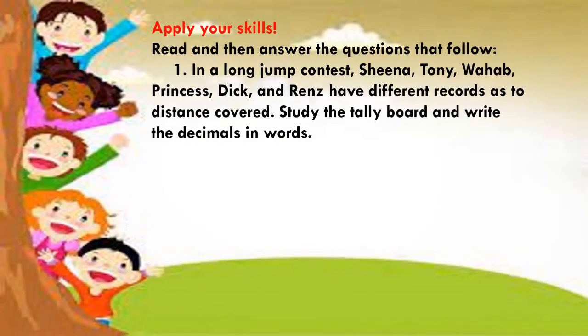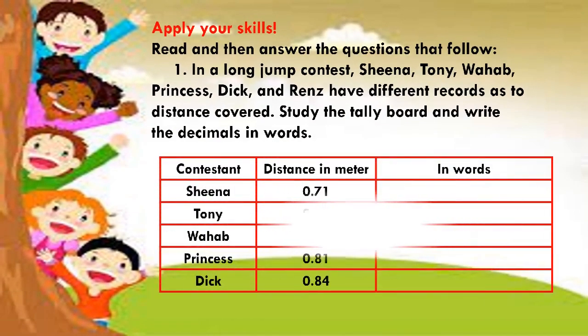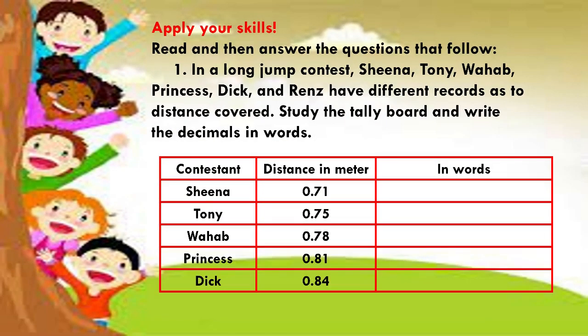Okay, another exercise. Get another one-half sheet of paper. Read and then answer the questions that follow. Number 1: In a long jump contest, Sheena, Tony, Wahab, Princess, Dick, and Renz have different records as to distance covered. Study the tally board and write the decimals in words.